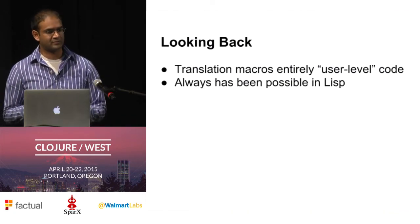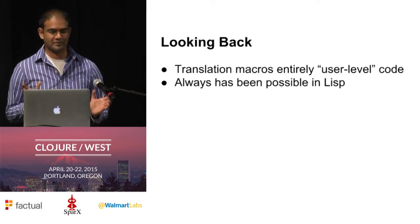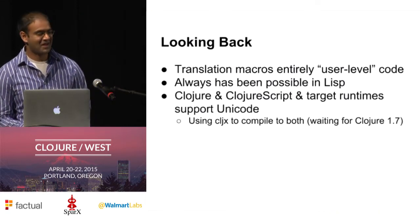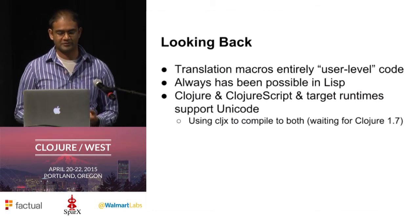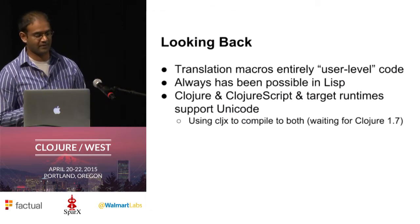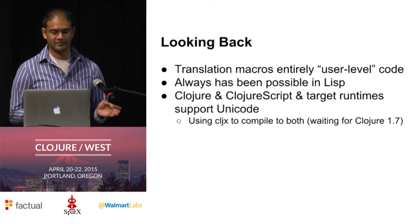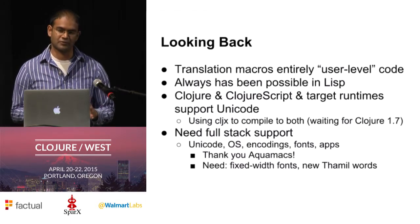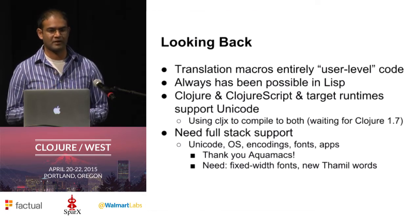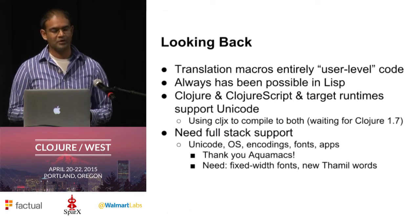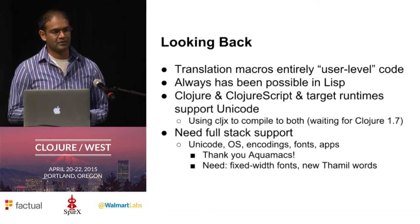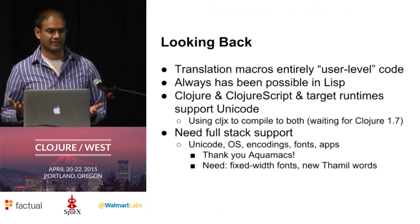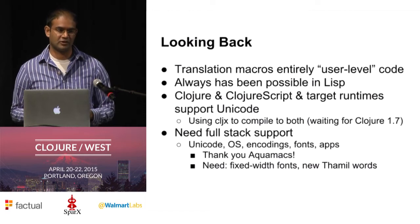There's actually nothing inherently specific to Clojure here — this has always been possible in Lisp, which means there's probably somebody out there already programming entirely in Common Lisp entirely in Klingon. It also helps that Clojure, ClojureScript, and their target runtimes — the JVM and JavaScript — all support Unicode. I was using CLJX as a helpful way to take one code base and compile simultaneously to both JVM and JavaScript, but once Reader Conditionals come out in Clojure 1.7, that will supersede CLJX. But you still need full-stack support — even though Unicode support came in the early 90s and macOS and Windows added it around 2000-2001, you still need fonts and applications supporting all of this. When I started this library, I shelved it for nine months because I couldn't find a proper editor to handle the text, and only came back when I found Aquamax. Nine months is a lot longer than the time it took to actually write this code.